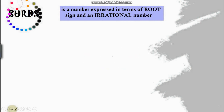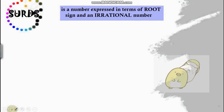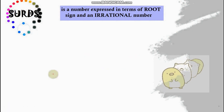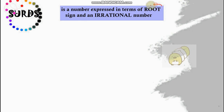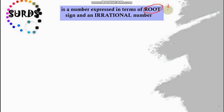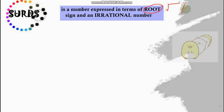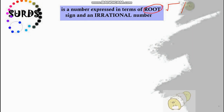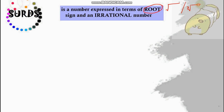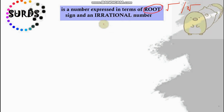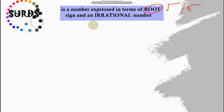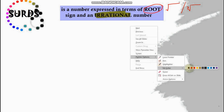So let's start with the definition of surds. A surd is a number expressed in terms of a root, so it must have this kind of root notation — whether it's a square root, a cube root, and so on. Importantly, it must also be an irrational number.